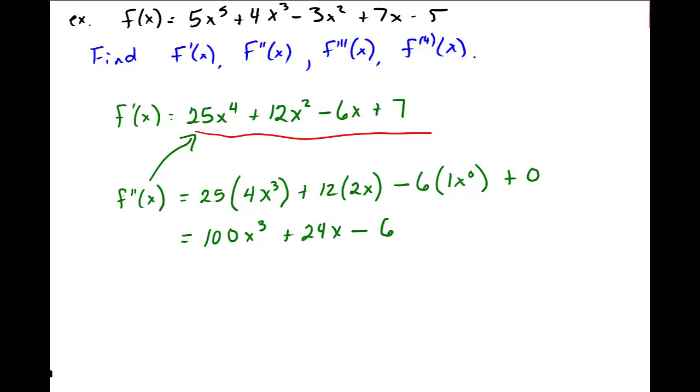I just want to be explicit about where these numbers are coming from here. So this is 100x cubed, plus 24x, minus 6. That's the second derivative, OK? OK. Let's, we'll do the third derivative. Same sort of idea. I'm going to look at this function right here, the second derivative, and take the derivative. So I get 300x squared, plus 24.